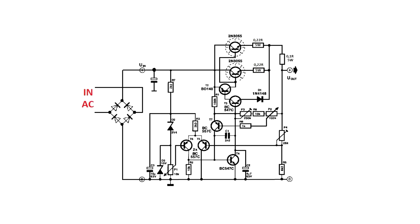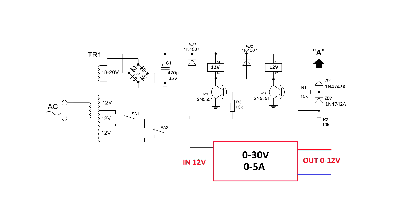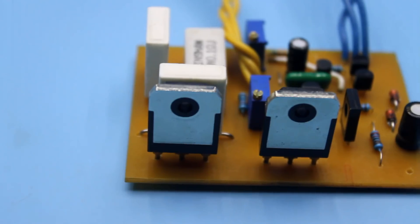The principle of operation is very simple. At low output voltages, a smaller voltage is applied to the input. Thus, the power dissipated on the transistor will be much less, hence the efficiency will increase.